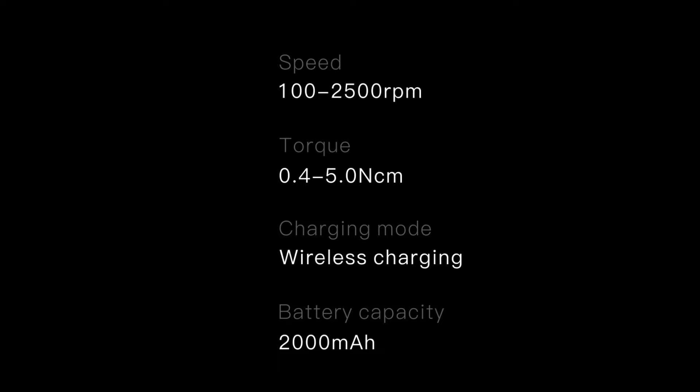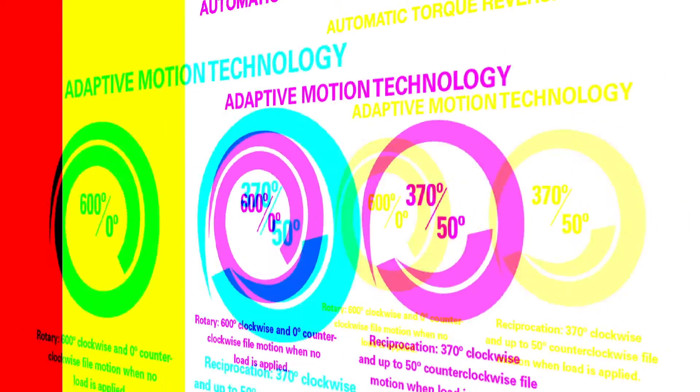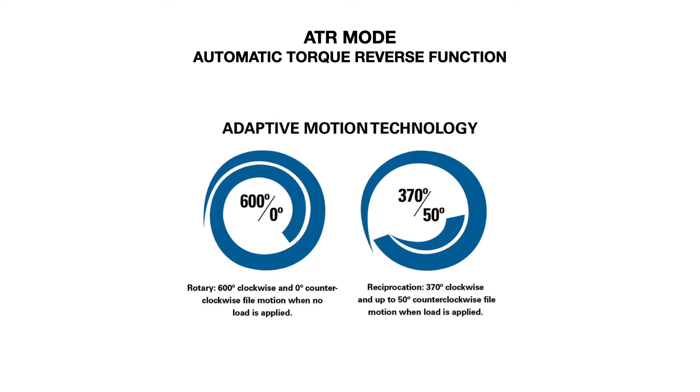There are other features slightly better than other motors. The maximum speed of this endomotor is 2500 RPM — generally all endomotors have a maximum speed up to 600 or 1000 RPM — whereas this has a speed range up to 2500 RPM, specifically for using Gates Glidden drills or long-neck burs in slow speed for exposing instruments during instrument retrieval.